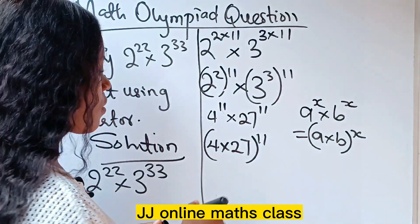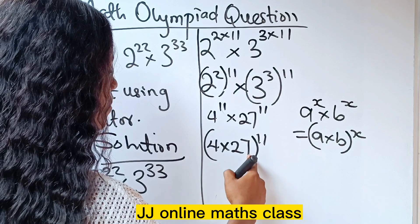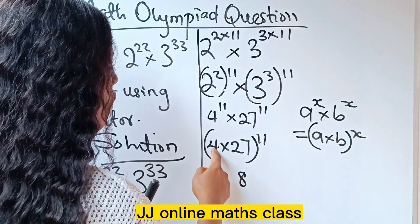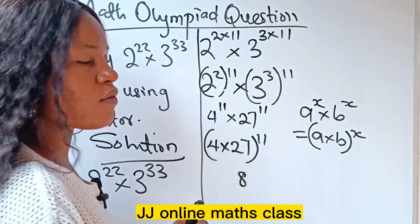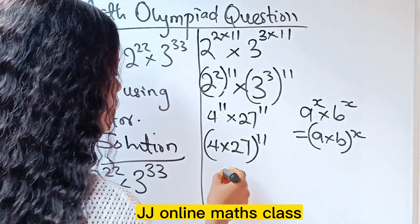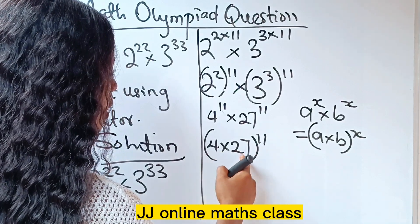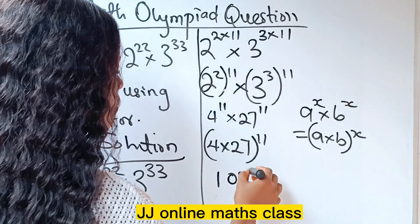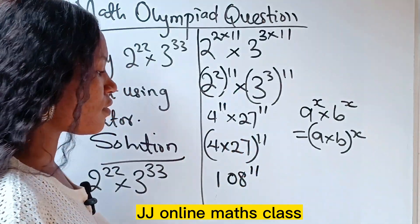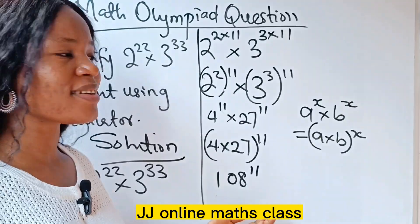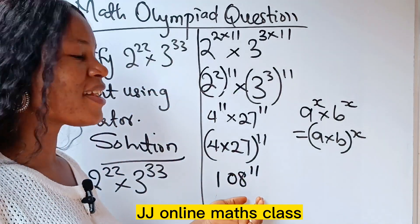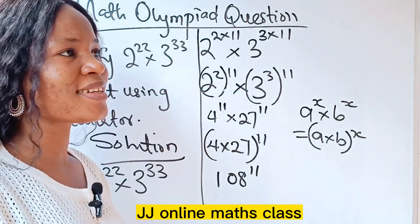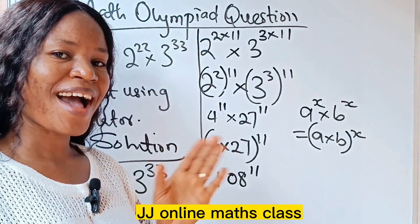What is 4 times 27? 4 times 7 gives us 28, carry 2; 4 times 2 gives us 8, plus 2 is 10. So 4 times 27 is 108. Therefore the answer is 108 raised to the power of 11. Thank you so much for watching and have a great day, bye!